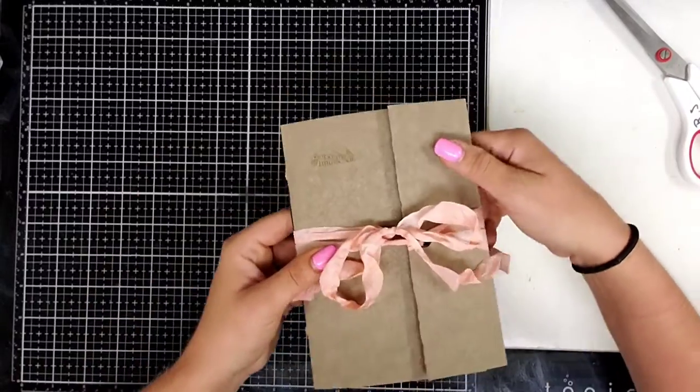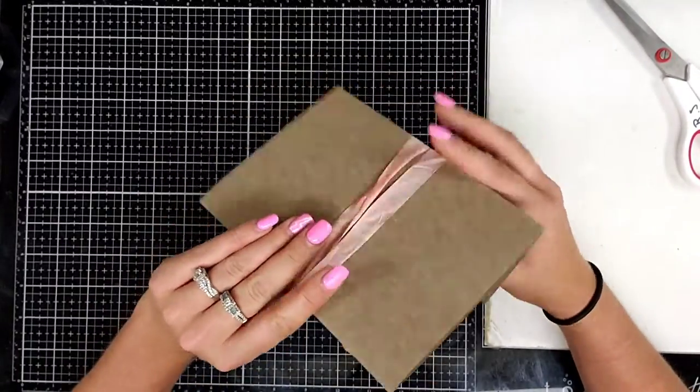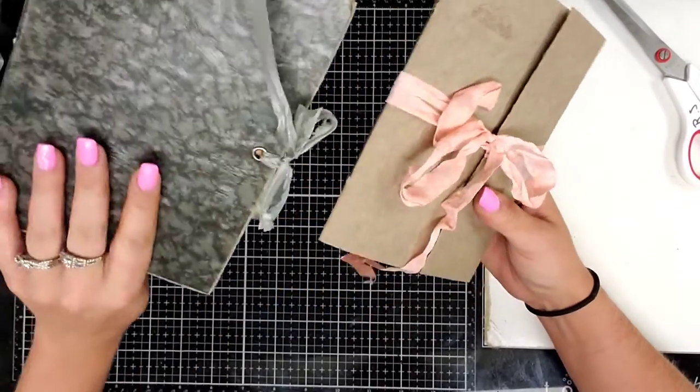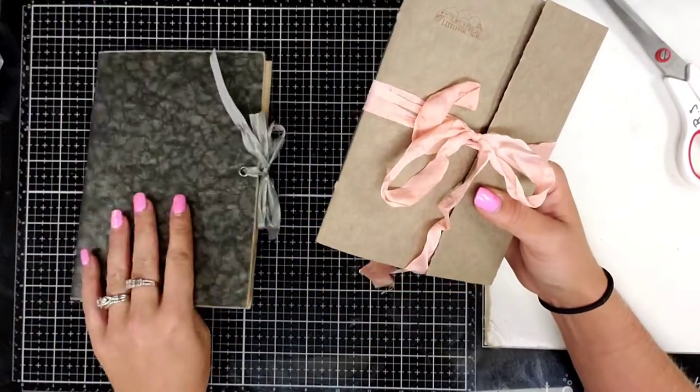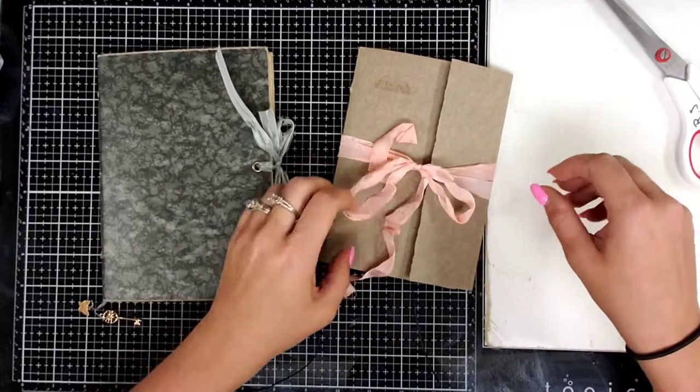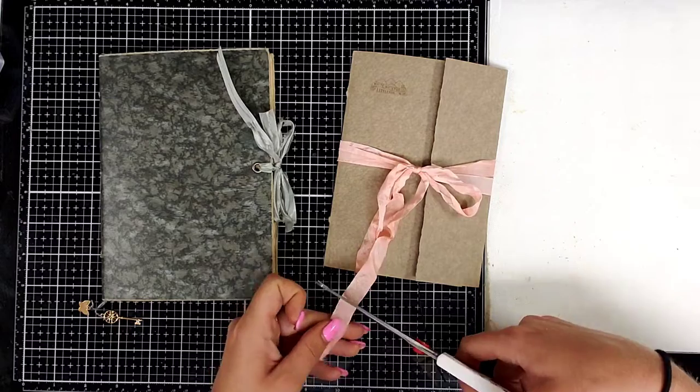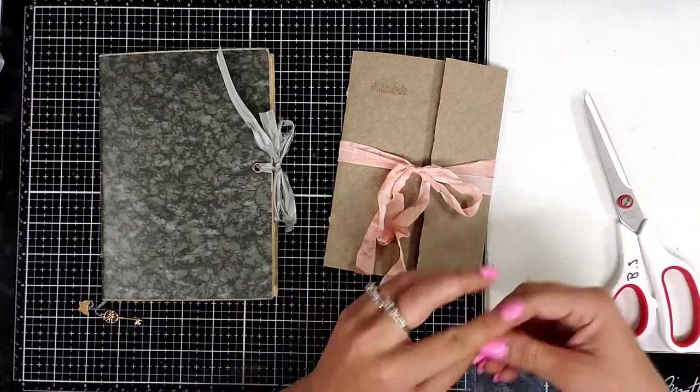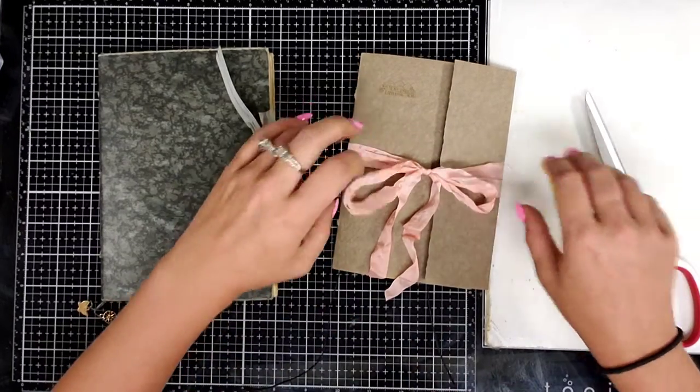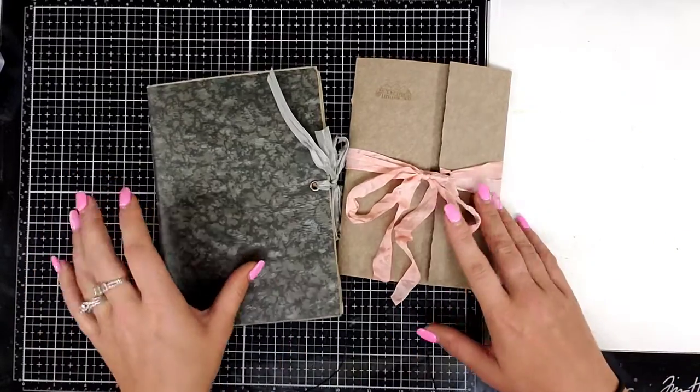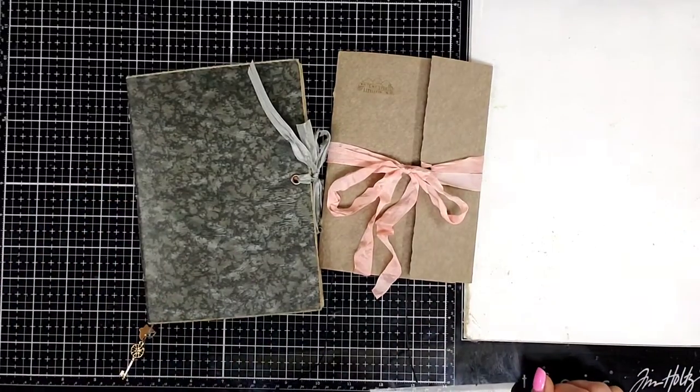And there we have it, super cute. You can decorate it, you can do whatever you guys want to them. And we made that in under 10 minutes. I mean literally it's that quick. They're super cute and fun to make and they're super cute to stick in as happy mail. I mean who wouldn't love a little mini journal.